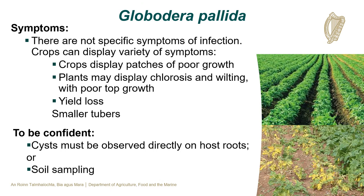The symptoms of Globodera palida are not specific and crops may display a variety of symptoms. These can include poor patches of growth within the crop, chlorosis or wilting with poor top growth, and some crops may have yield loss and smaller tubers. To be confident of the presence of Globodera palida, cysts must be observed directly on the roots of host plants. The presence can also be confirmed by the analysis of soil samples.